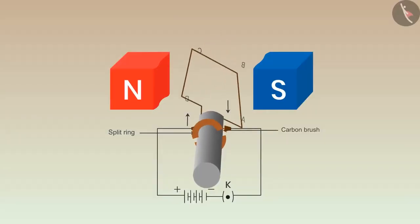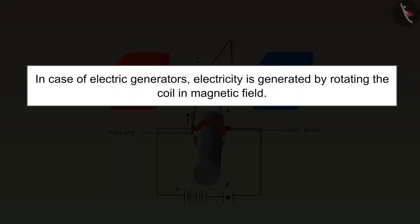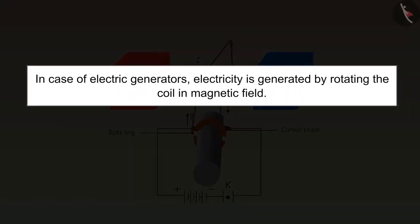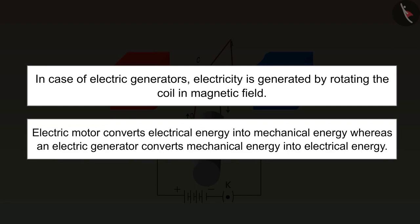In the case of electric motors, the coil is rotated when electric current is passed through the coil placed in the magnetic field. Whereas in the case of electric generators, electricity is generated by rotating the coil in the magnetic field. Electric motor converts electrical energy into mechanical energy, whereas an electric generator converts mechanical energy into electrical energy.